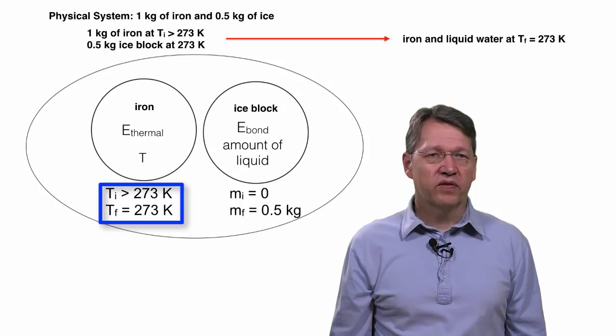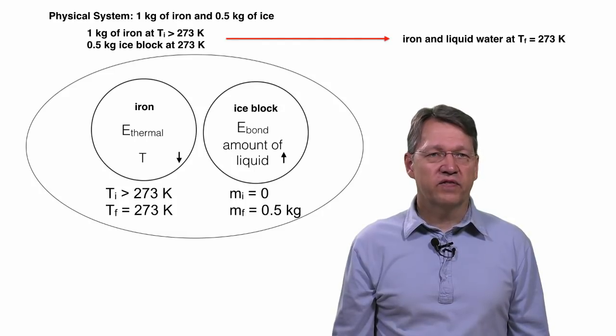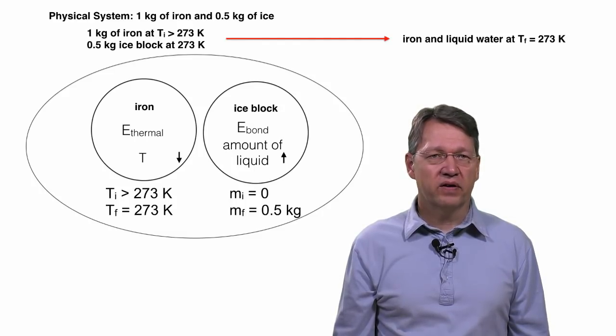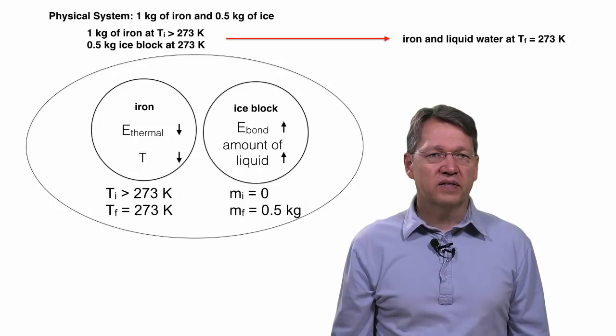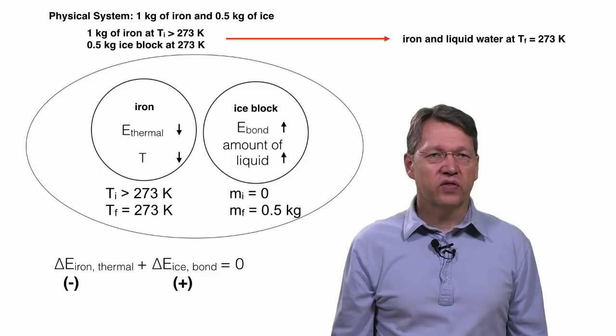We also know that the final temperature of the iron is 273 Kelvin, which is below its initial temperature. So the temperature and thermal energy of the iron are going down and the bond energy of the water is going up, since the amount of liquid is increasing. The equation for conservation of energy is that the change in thermal energy of the iron plus the change in bond energy of the ice add up to 0.